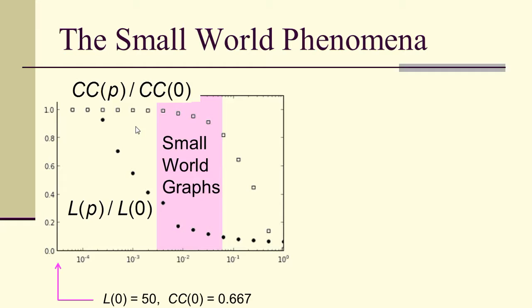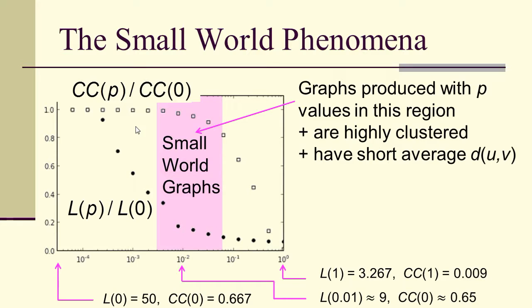Here we're looking at 0, we get 50 and 0.667 for the length and the clustering coefficient. At 0.01, we get 9 and 0.65 for the clustering coefficient. And at 1, we get 3.267 and 0.009 for the clustering coefficient. So you can see the clustering coefficient remains high even as the path length drops to 0 quickly. So graphs produced with p in this region are highly clustered and have a short average distance between vertices. They're small world.